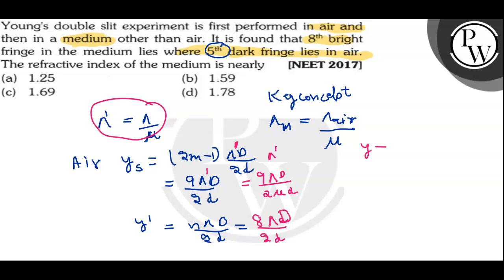Then, it means 9 of lambda D upon 2 mu D is equal to 8 lambda D upon 2D. Now, which things are common?